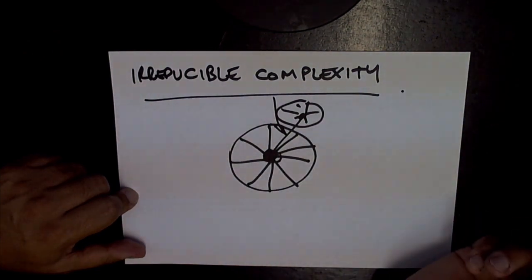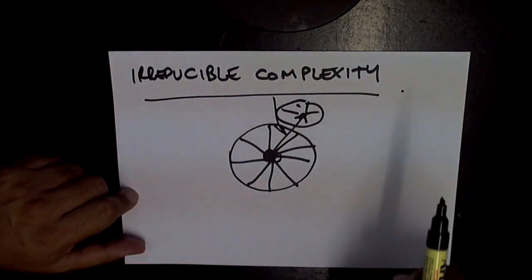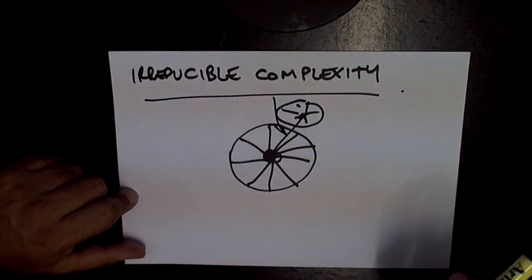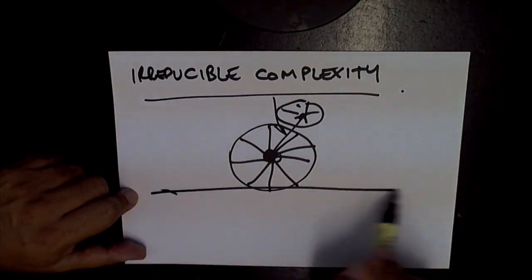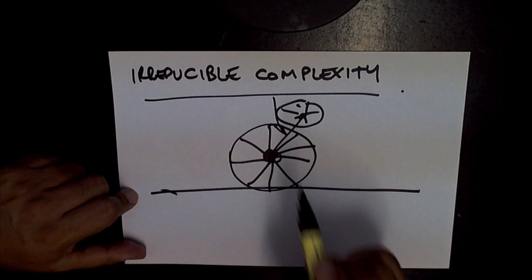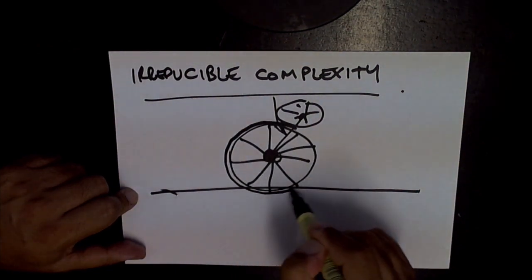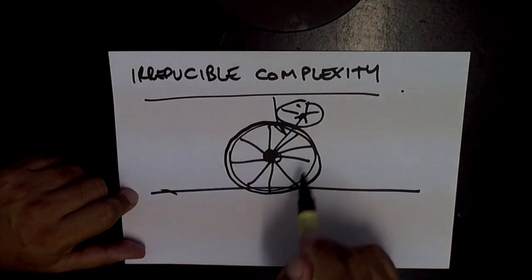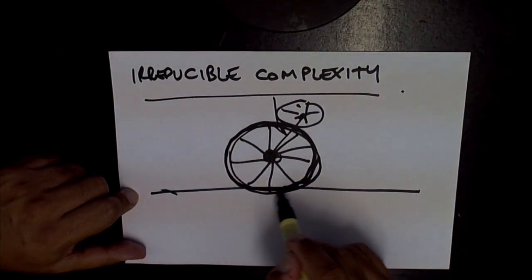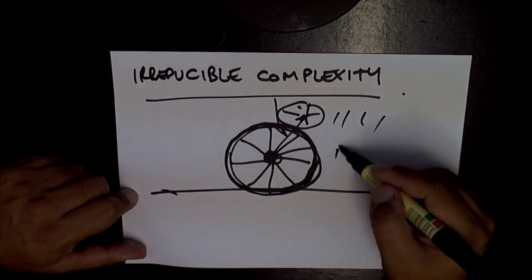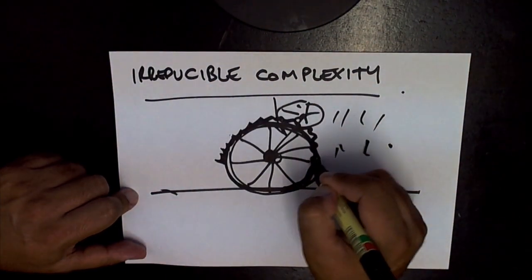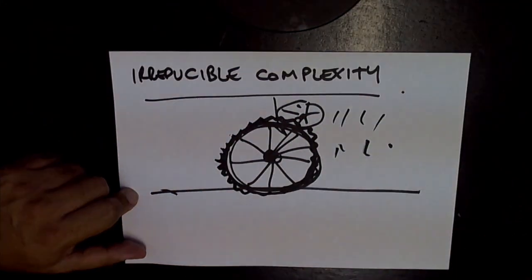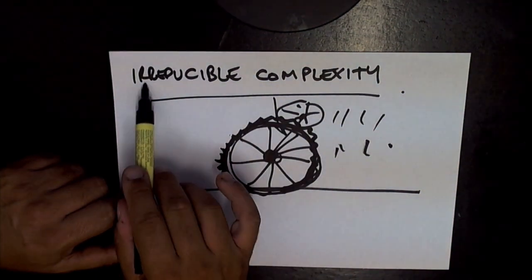If you're missing any one of these parts, the wheel doesn't work. Now if you increase the purpose of the wheel, there are other parts of complexity you need to add. For example, if the wheel is going on a bitumen road not just a dirt road, the wheel now needs rubber on the outside of the rim. If it's raining, you need tread on the rubber - that's another complexity you need to add.